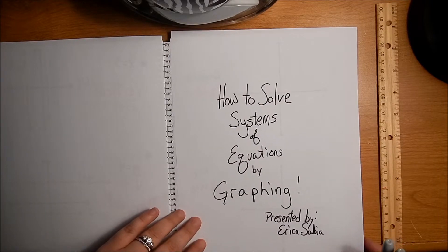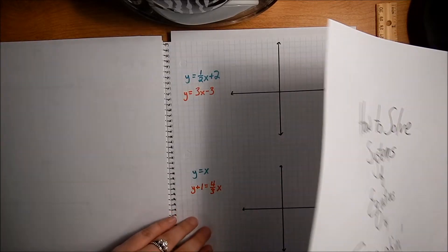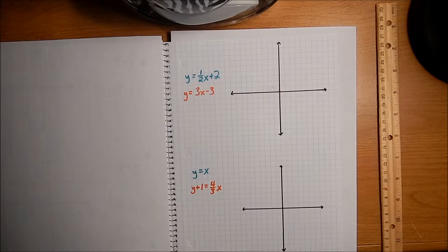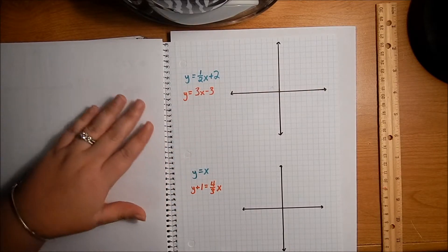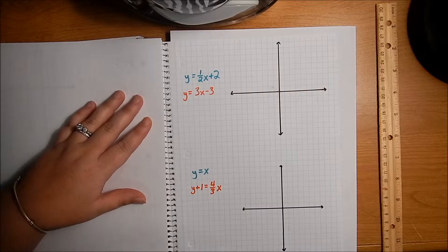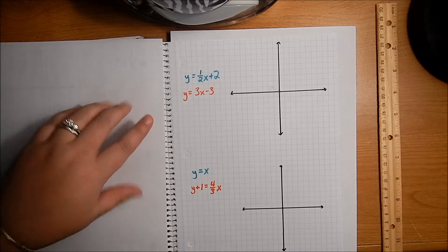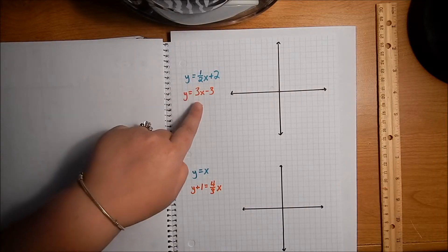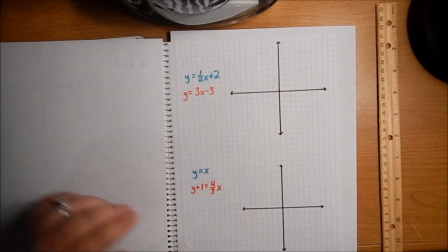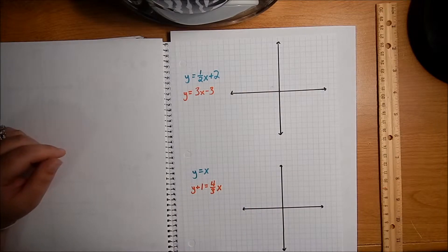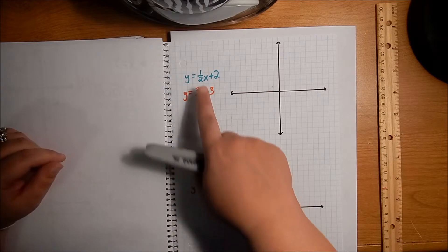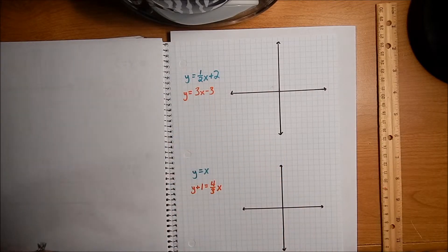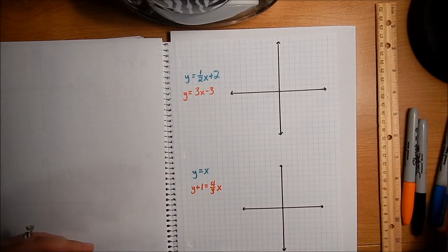Let's take a look. Here's an example. If I want to solve this system of equations by graphing, all I need to do is graph each equation on the same set of axes, and then wherever they intersect, that point is the solution. So if you know how to graph these, you're golden.